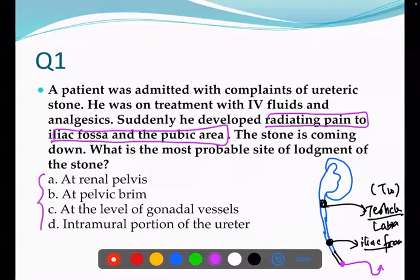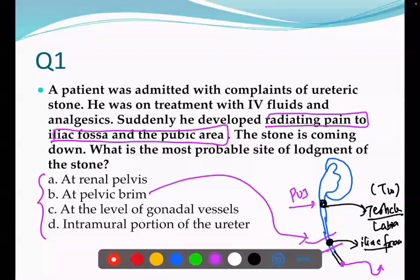In this question, the pain radiates to the iliac fossa and pubic area — that means the stone is at the level of the mid ureter. Now correlate: there are five narrowings in the ureter. The first is at the pelvi-ureteric junction (PUJ), and the second narrowing is at the pelvic brim — exactly at the level of the mid ureter. So the answer is pelvic brim. The gonadal vessel and intramural parts are at the lower ureter.